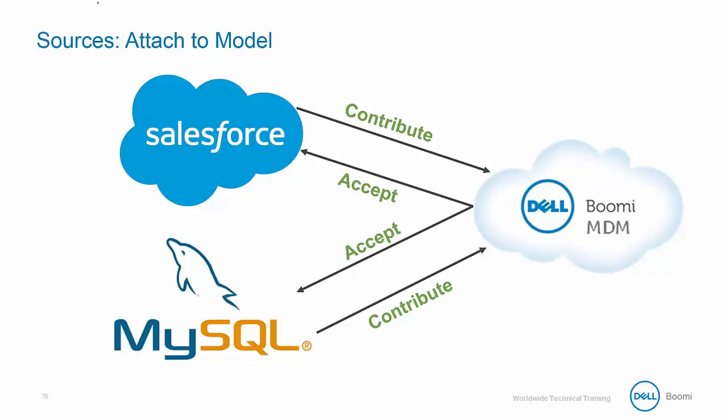Some common exceptions include data warehouses, spreadsheets, and web forms. Data warehouses are commonly designated as non-contributing sources, meaning MDM is only able to send updates, creates, or delete requests, whereas the warehouse is not permitted to connect to the MDM repository. This gives you greater control over the security and accuracy of your data, since you can allow your trusted sources to change data in the MDM repository while sources that could have outdated data cannot.